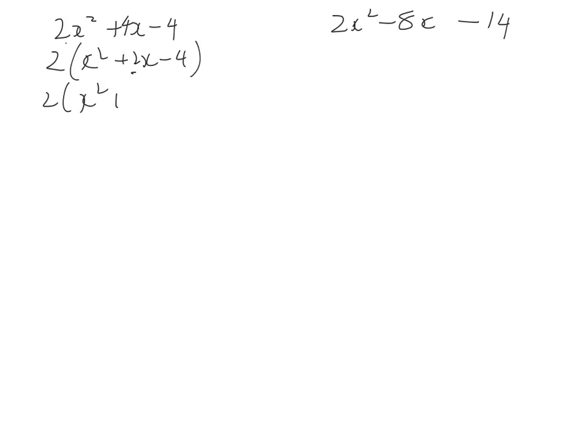Then we halve and square 2. So we've got x squared plus 2x. Half of 2 is 1, 1 squared is 1. So we're going to say plus 1 minus 1 minus 4. So now we've got 2. That will factorize to x plus 1 all squared and this becomes minus 5.